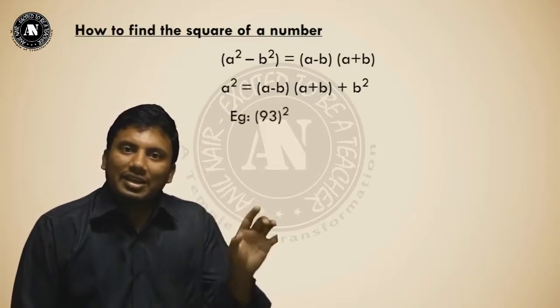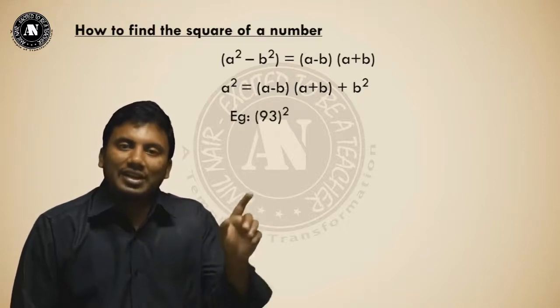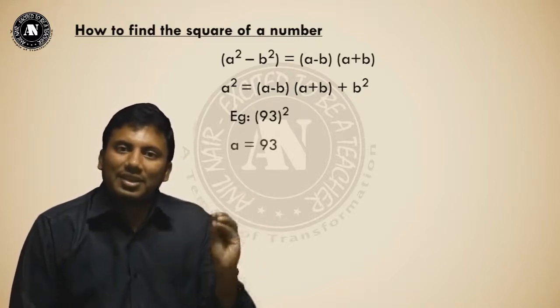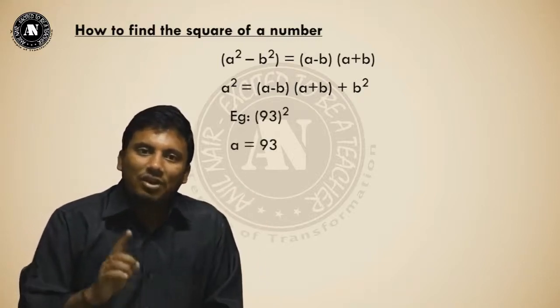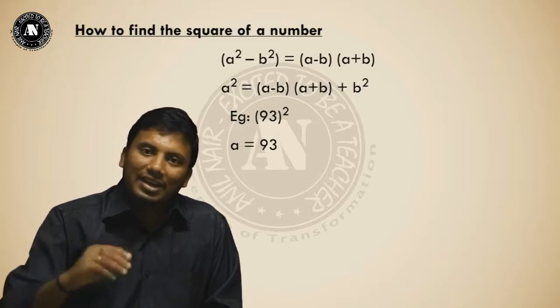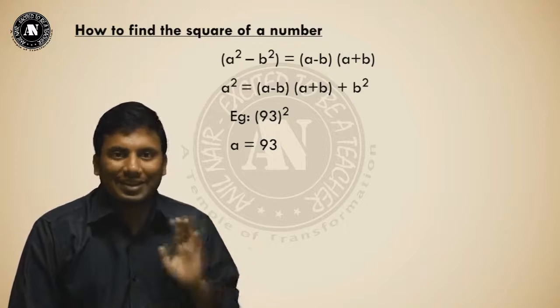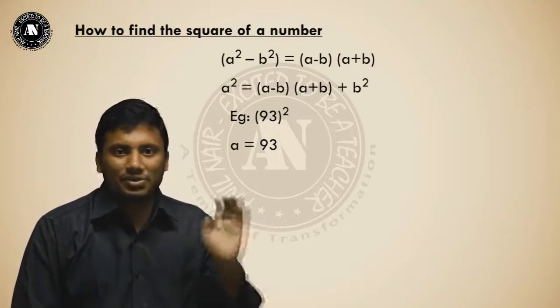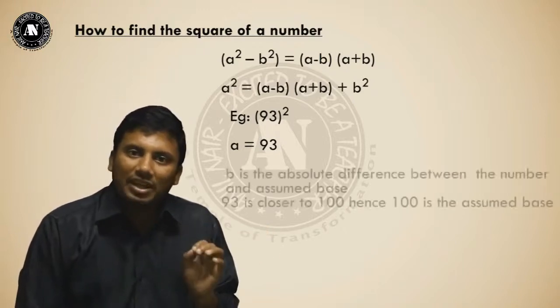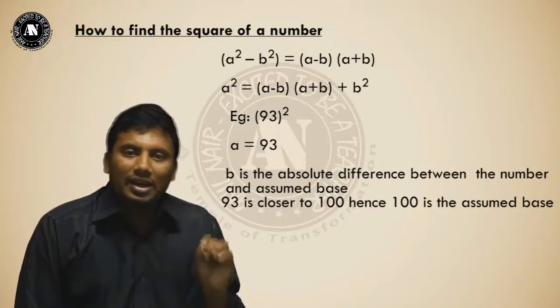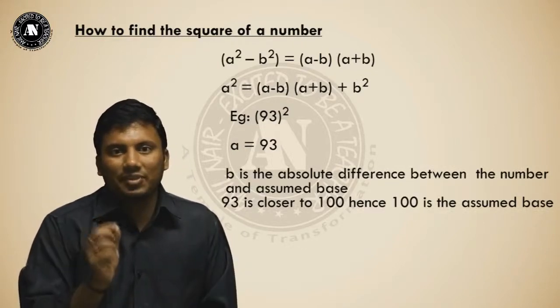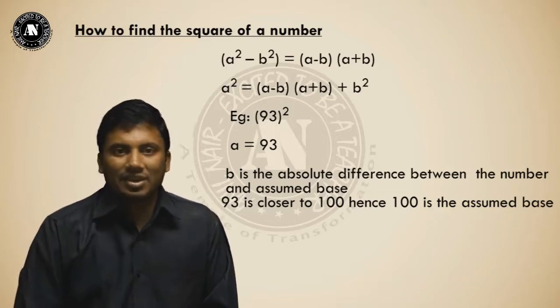Let us take an example. 93 whole square. A value is 93. If I get the value of b on the right hand side, I will get the answer. 93 is nearer to which power of 10? 100. So, take the base as 100. b is the absolute difference between the number and assumed base. What is the difference between 93 and 100? 7.